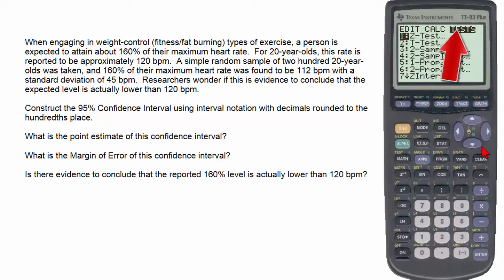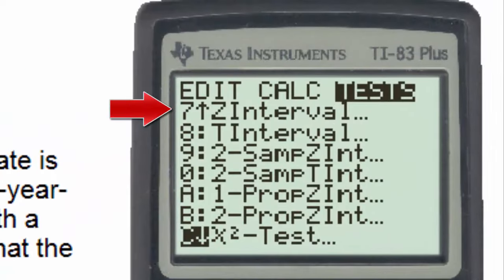and then scrolling down to the interval, so that the number 7 is at the top of the list, we see that there are 6 different types of intervals one can find using the TI-83.